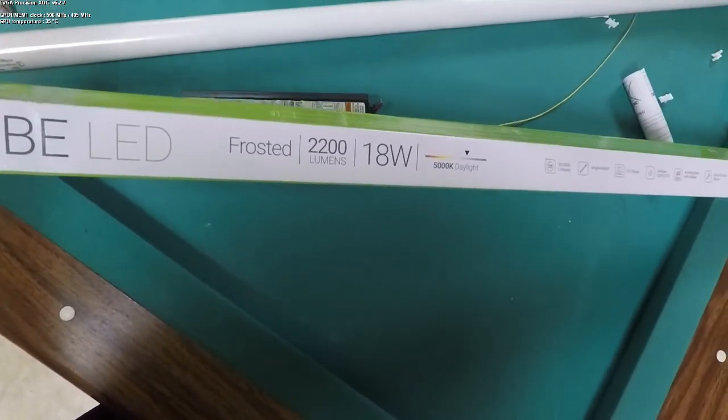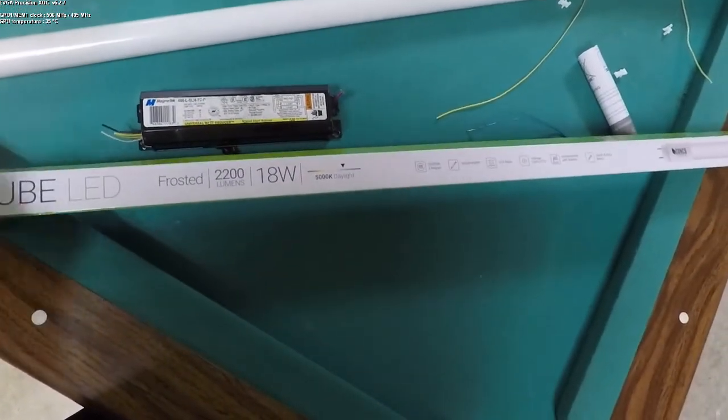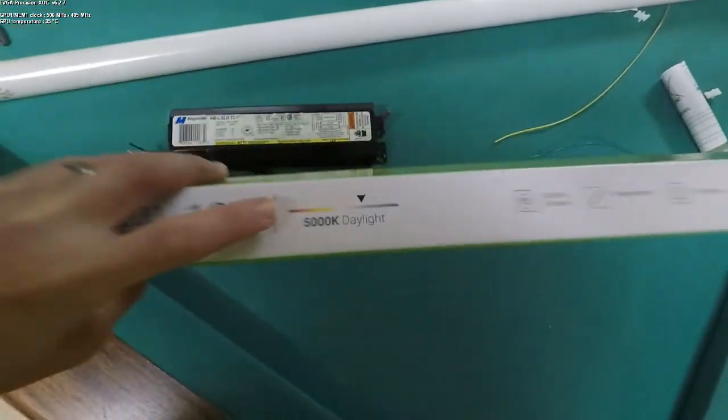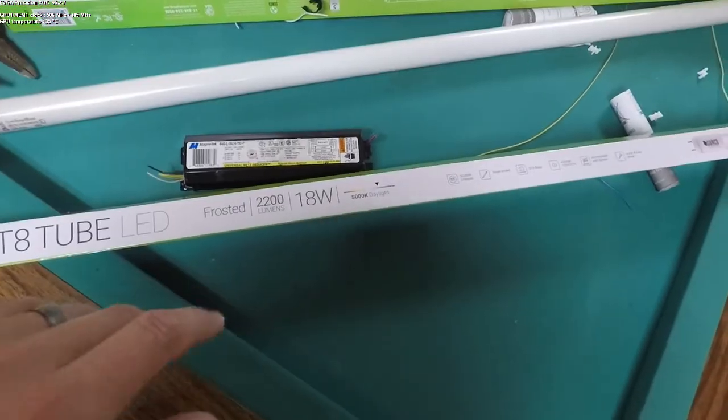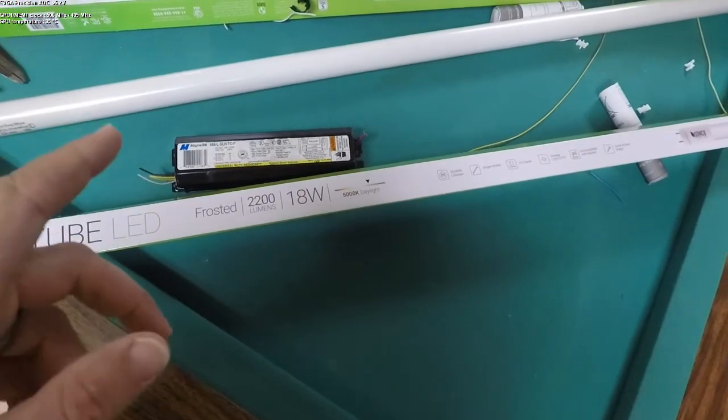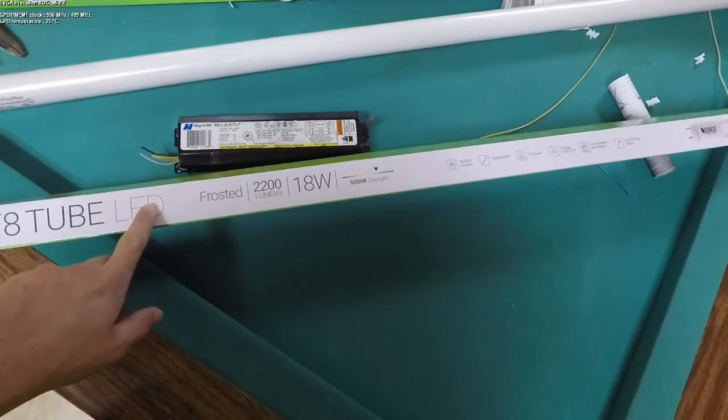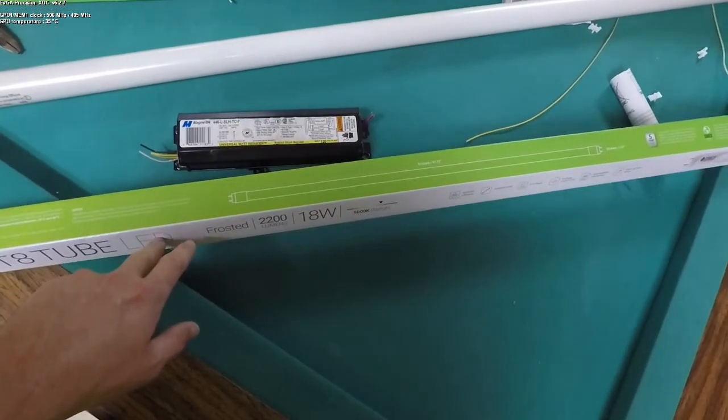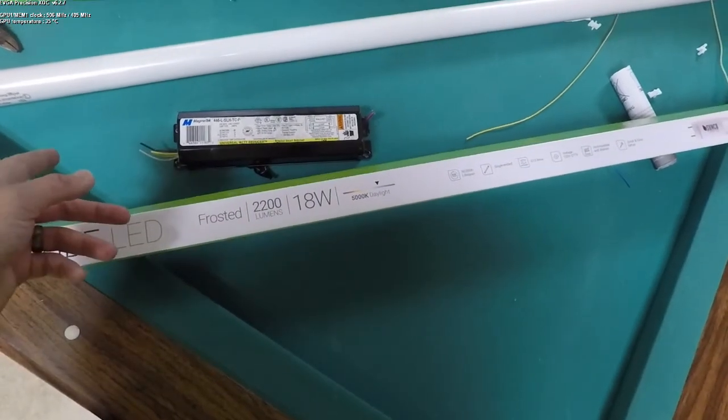You use quite a bit less power and I've noticed with these 5,000 Kelvin daylight rating LED tubes, I can get away with just two LED tubes per fixture whereas the old fixtures had four of the fluorescents.